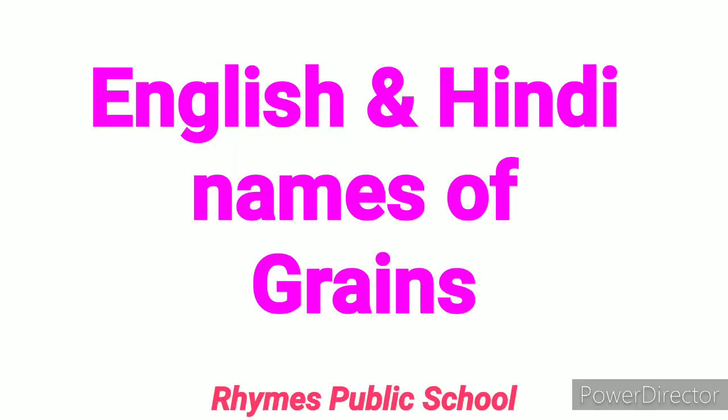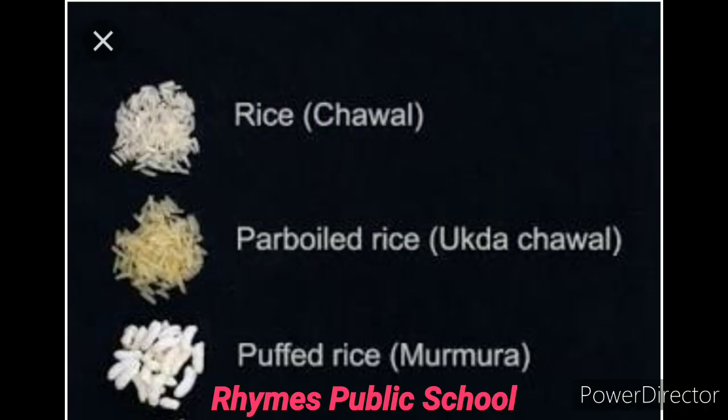Let's move ahead and discuss English and Hindi names of grains — matlab anaj. Gehun means wheat. Chawal means rice. Ugad chawal is somewhat half-boiled rice which is famous in South India — usse kaha jata hai parboiled rice.